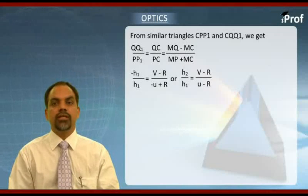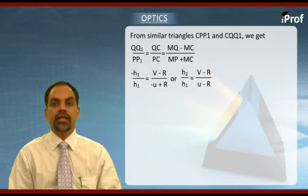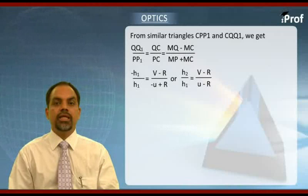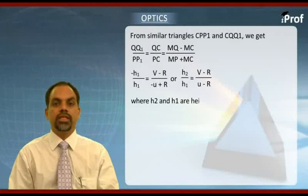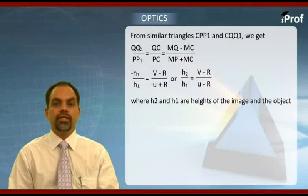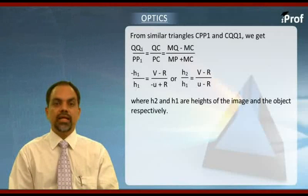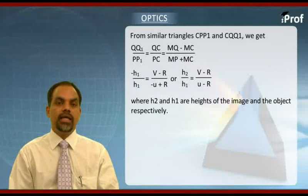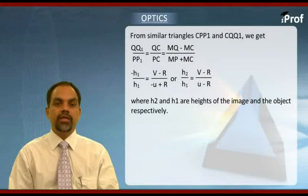By definition this h2 over h1 is the magnification of image. That is the height of image upon height of object. This we call it magnification. Students are required to remember this equation. And here magnification is obvious, it is transverse magnification that we are talking about.